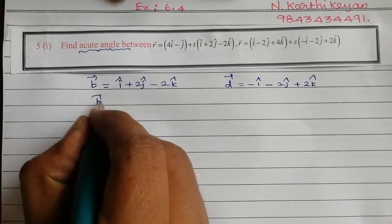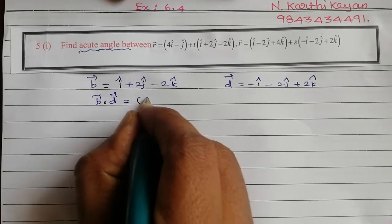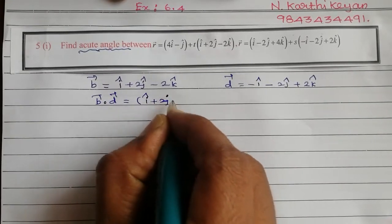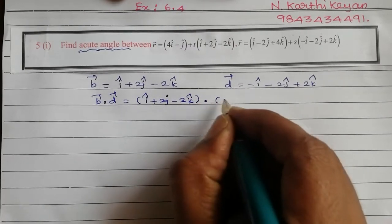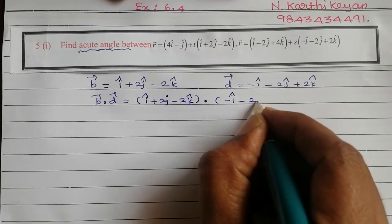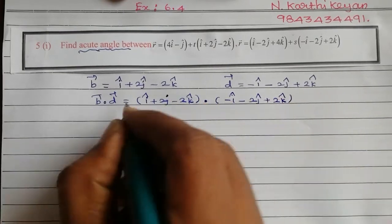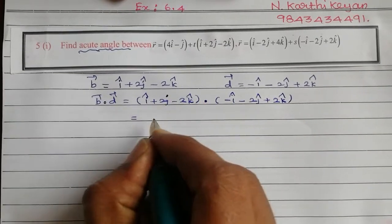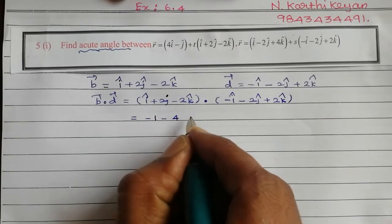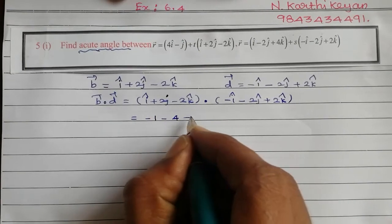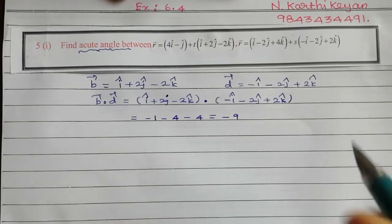First, we find b vector dot d vector. That is: i cap plus 2j cap minus 2k cap, dot, minus i cap minus 2j cap plus 2k cap. That is equal to minus 1 minus 4 minus 4, which equals minus 9.